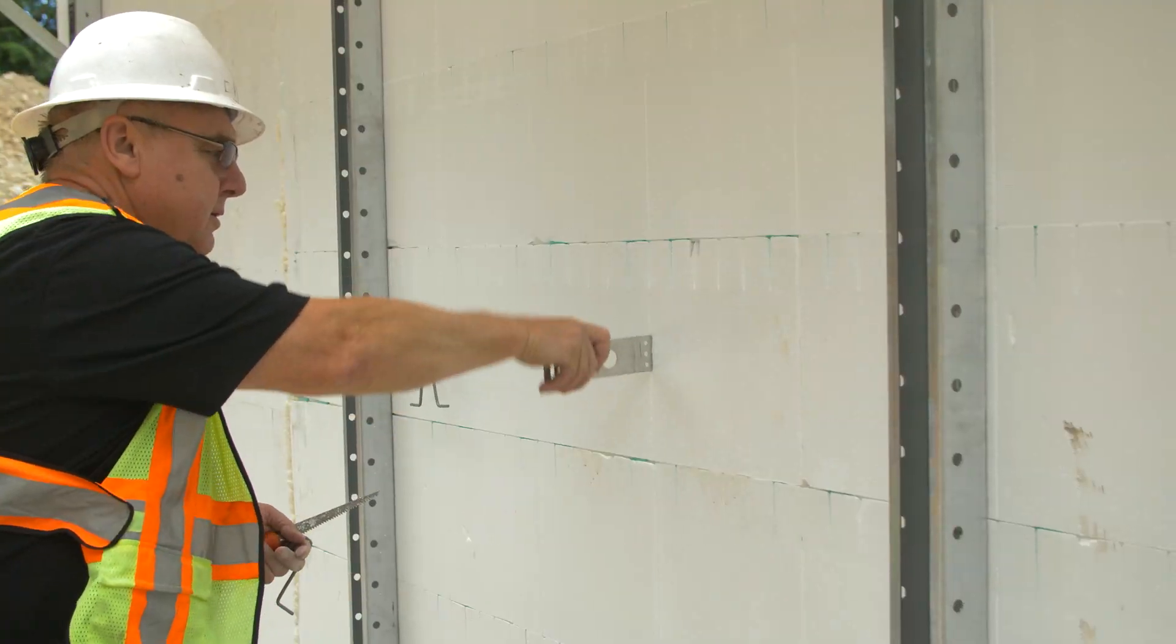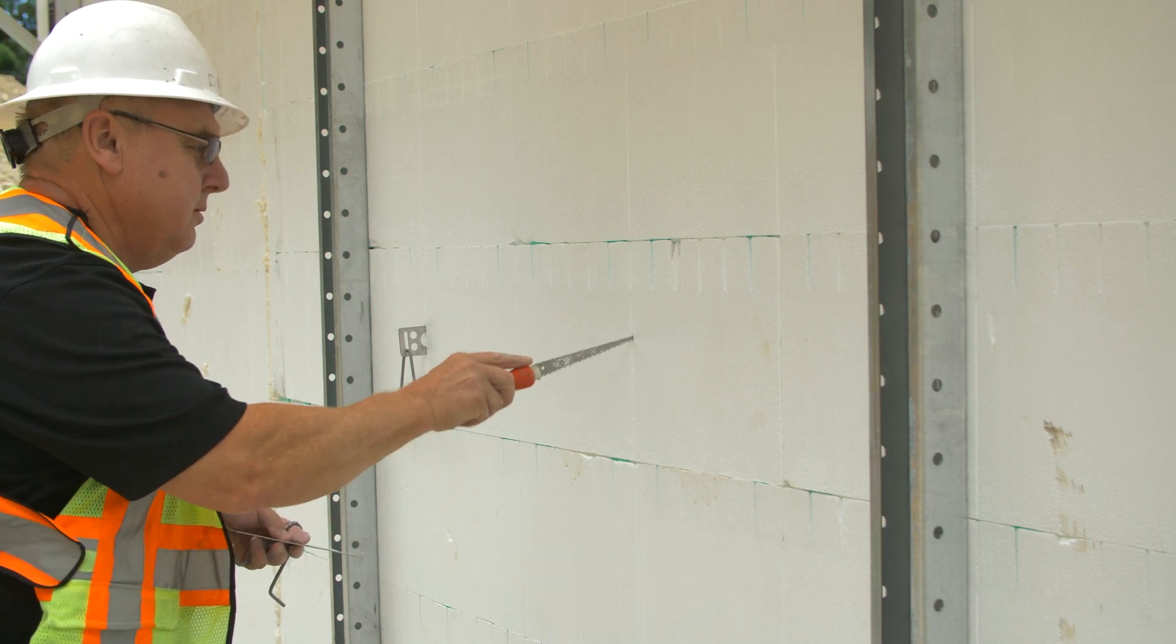If brick finish is specified, insert brick ties at correct spacing through the exterior EPS to embed in the concrete cavity.